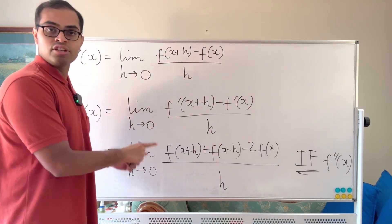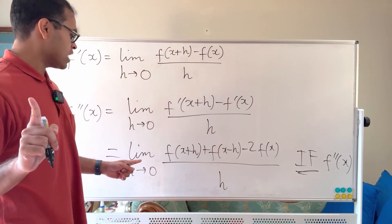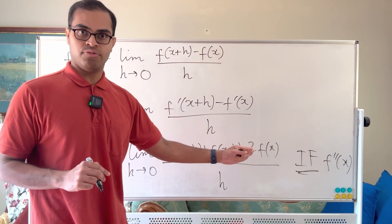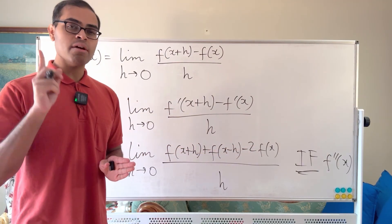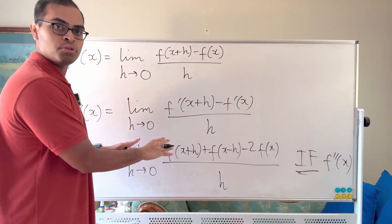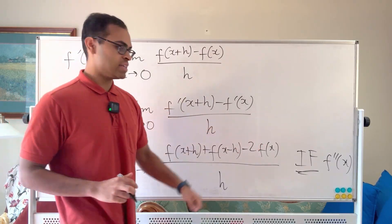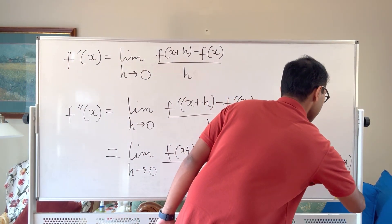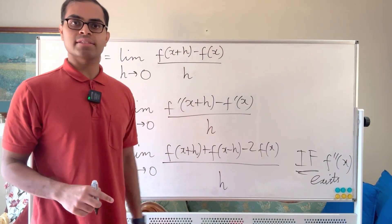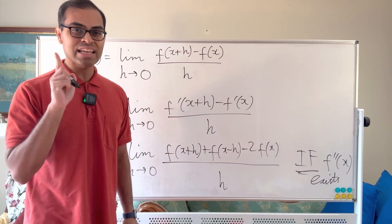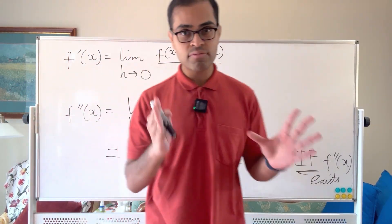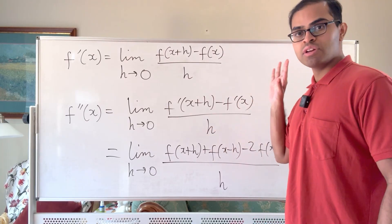A couple of points before we dive into the proof. The first point is that it is possible for this limit to exist even though f is not twice differentiable — watch till the end because I will show you a very fun example of such a function. But now we're going to rigorously prove that if f double prime of x exists, then this limit is equal to f double prime of x. I'm going to be very rigorous about this — I'm a professional mathematician, and I want to show you how to do math very rigorously.